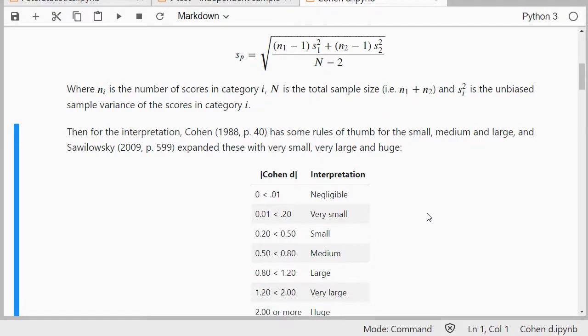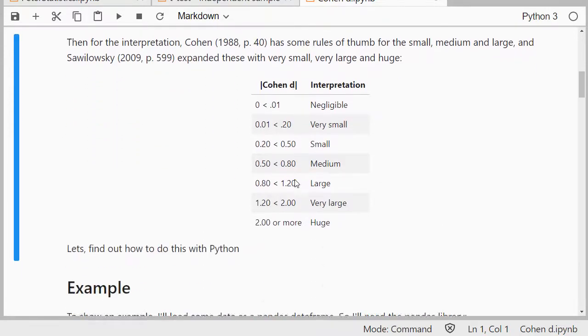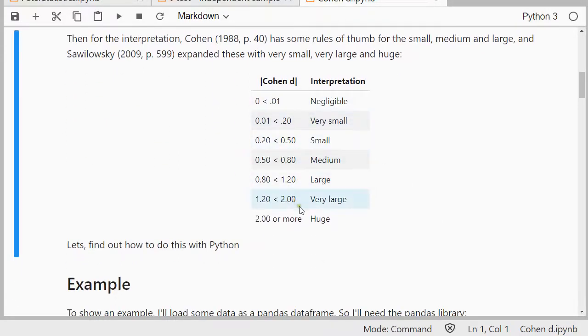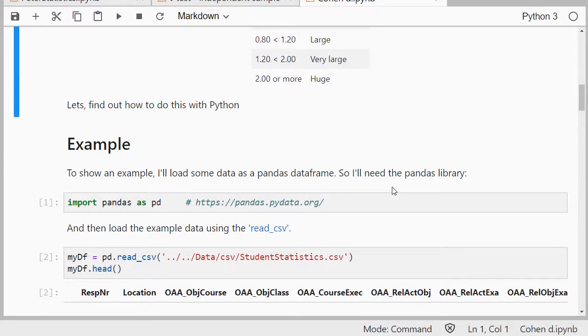For the interpretation, we can have a look at Cohen himself as a rule of thumb, with an expansion from Sawilowsky, and this would be then the interpretation as in is it a big or a small effect size. So let's run an example for that.